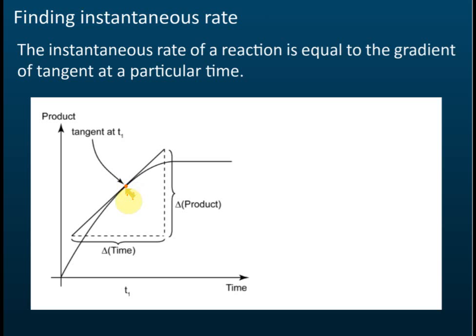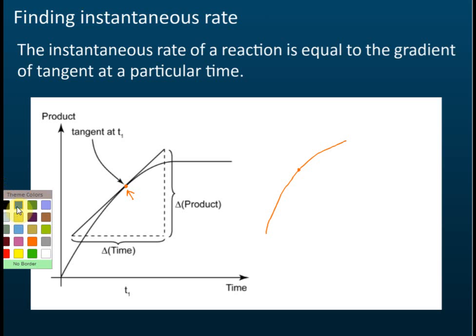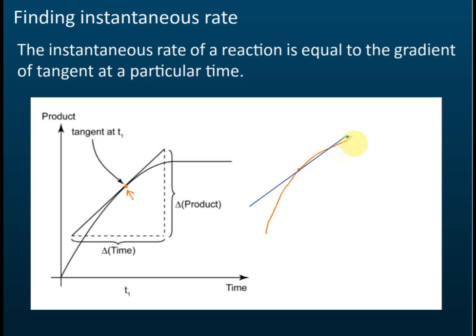How do you draw a tangent? A tangent is a straight line. The straight line cannot cross the curve. For example, if you draw a line like this and it crosses the curve, then it's wrong — that cannot be a tangent. The tangent can only touch that point without crossing it.